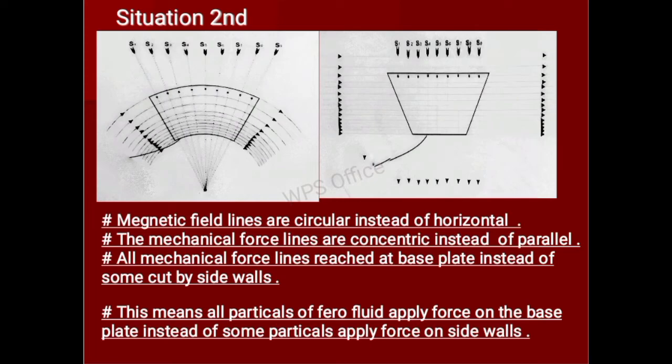The magnetic field lines are circular instead of parallel horizontal. The mechanical force lines are concentric instead of parallel. All mechanical force lines reach the base plate instead of some being cut by side walls. This means all particles of ferrofluid apply force on the base plate, instead of only some particles applying force on the side walls.